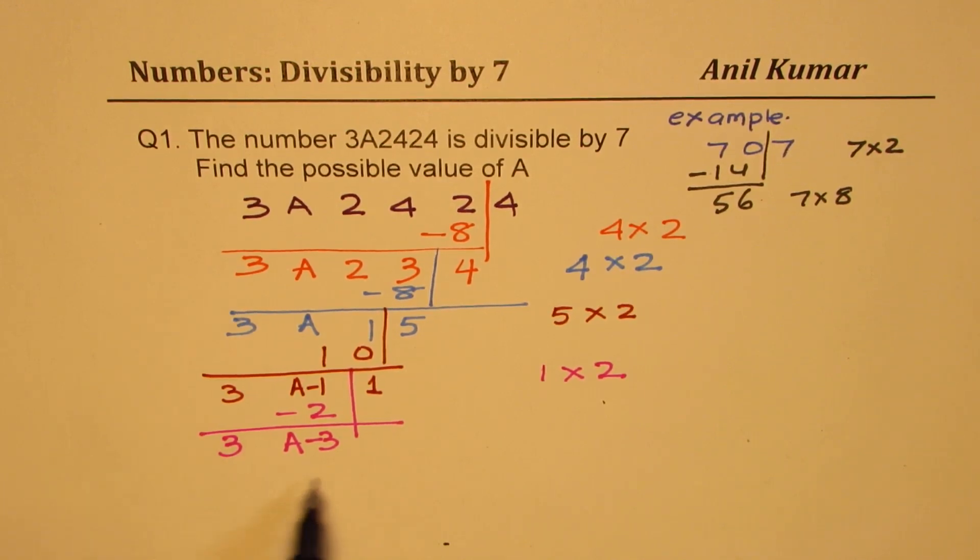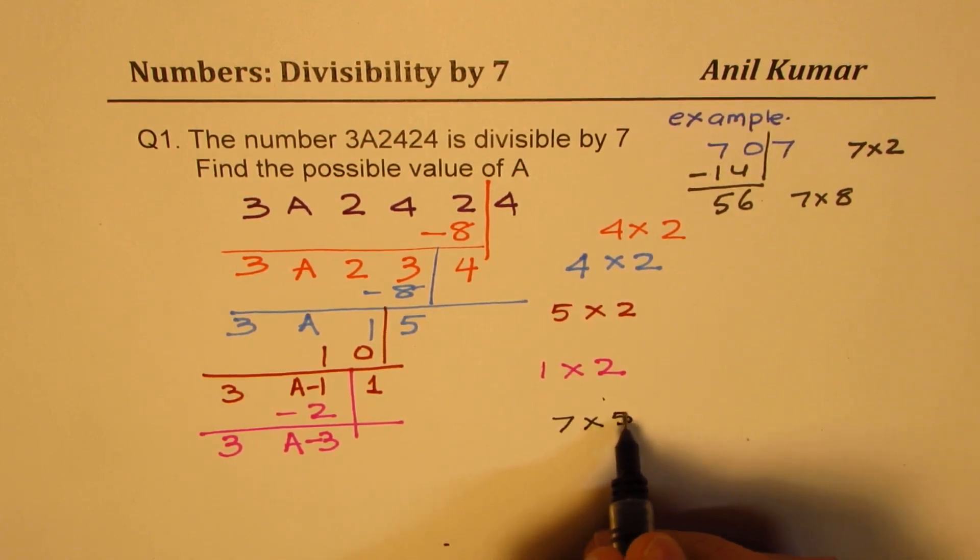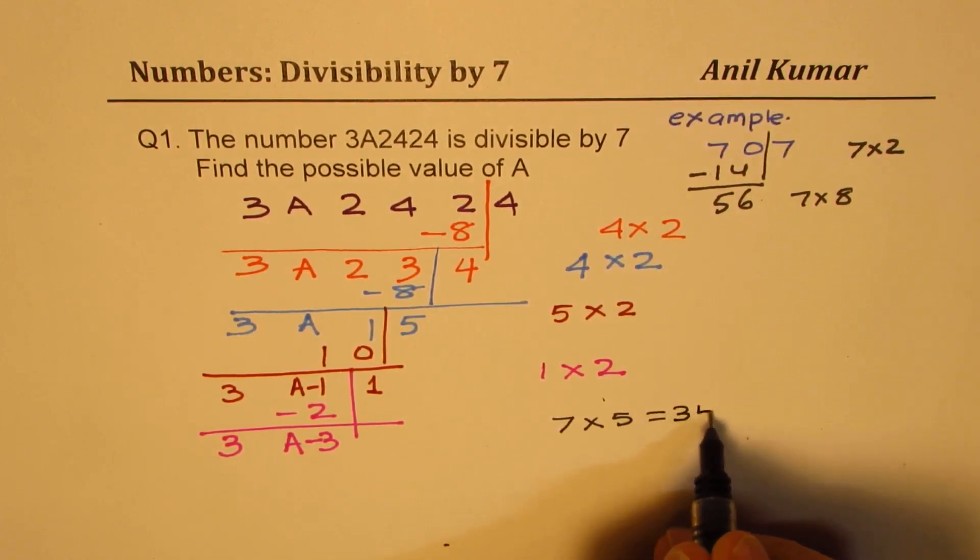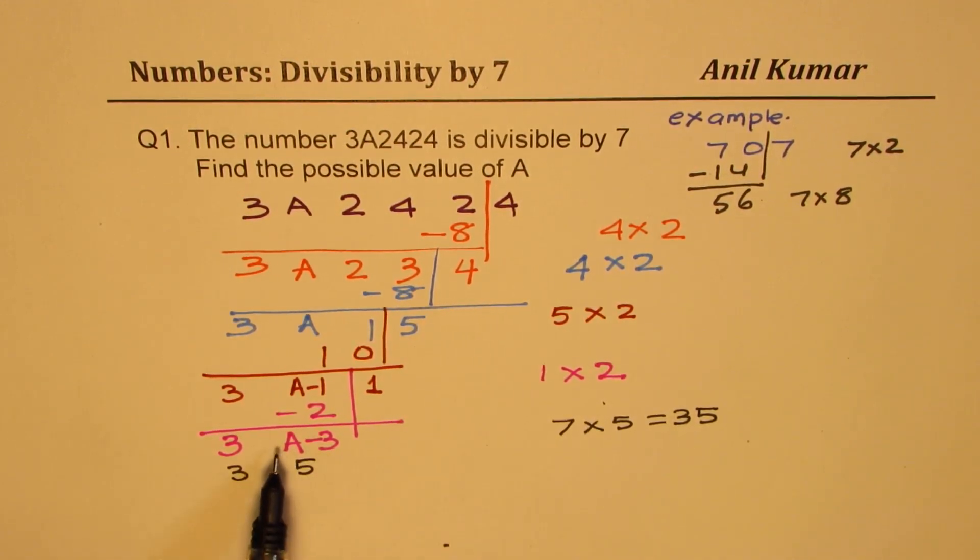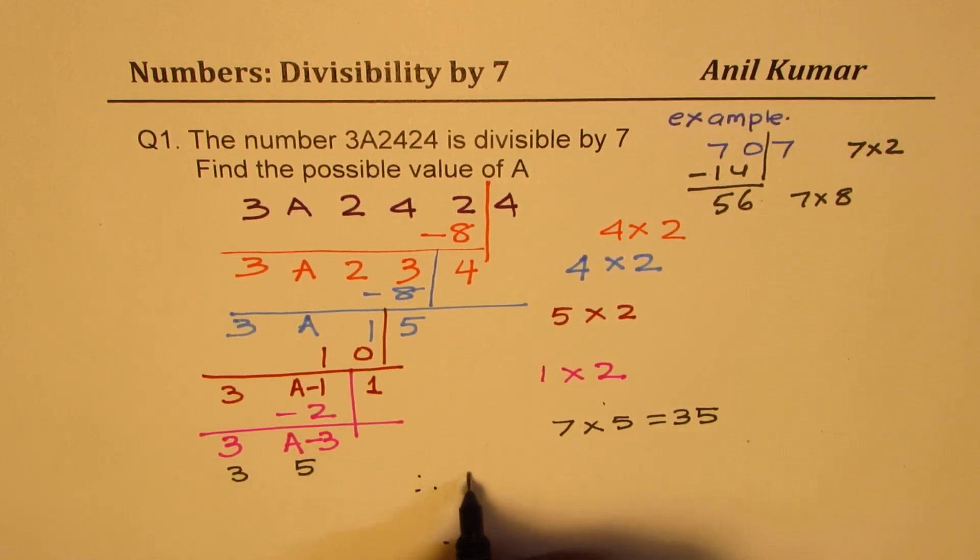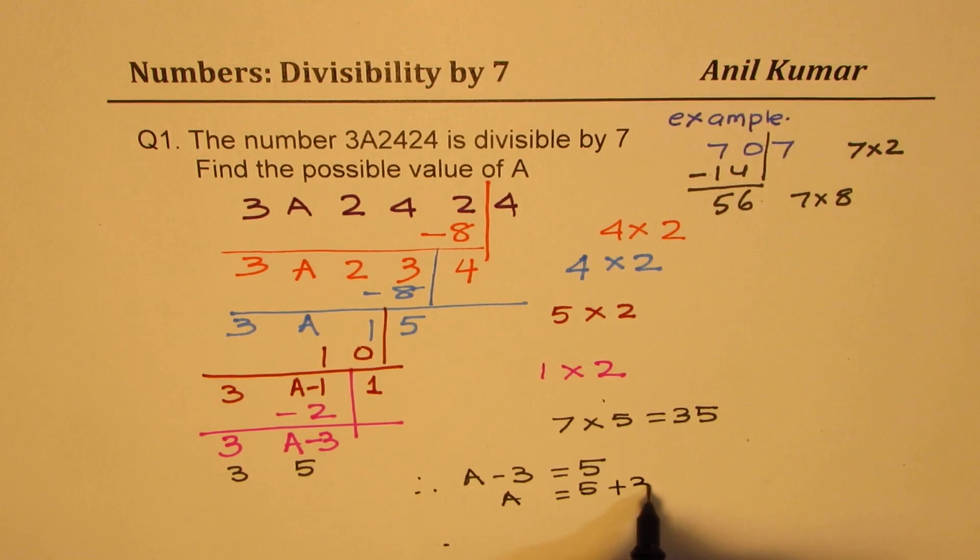Now for this to be a multiple, what can this be? We know 7 times 5 is equal to 35. So this should be 35. So that gives you that A minus 3 should be equal to 5. So therefore, A minus 3 is equal to 5 or A equals to 5 plus 3, which is 8.